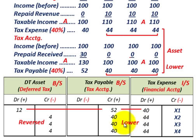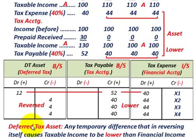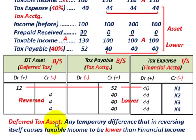So that's a deferred tax asset — we have lower tax payable in those later years than the tax expense for financial accounting. We started with an asset of $12,000 and reduced it by $4,000 for each of the next three years. By definition, a deferred tax asset is any temporary difference that, in reversing itself, causes taxable income to be lower than financial income.